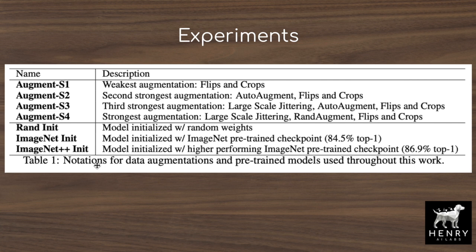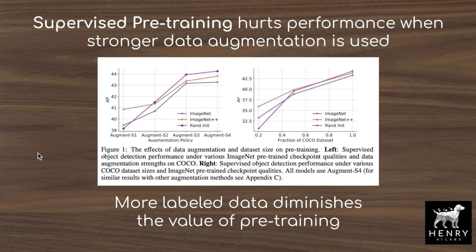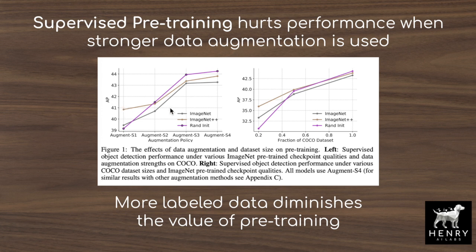For supervised pre-training initializations, the experiments compare random weight initialization, an ImageNet-initialized model pre-trained with AutoAugment achieving 84.5% top-1 accuracy, and an ImageNet++ model from Noisy Student using an additional 300 million images from the JFT dataset. Both ImageNet-init models use the EfficientNet B7 or L2 architecture to control for model capacity. Results show that supervised pre-training hurts performance when stronger data augmentation is used: as augmentation strength increases, only the randomly initialized model consistently improves in average precision, while the supervised pre-training models do not keep pace.